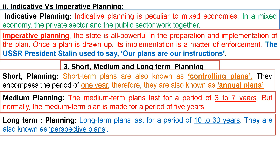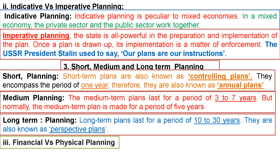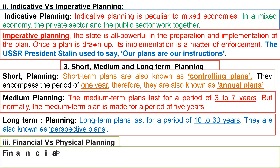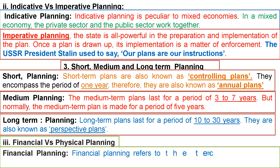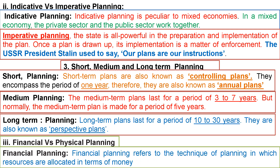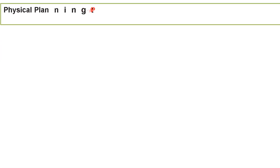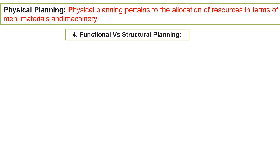Financial planning refers to the technique of planning in which resources are allocated in terms of money. Physical planning pertains to the allocation of resources in terms of men, material, and other physical resources.